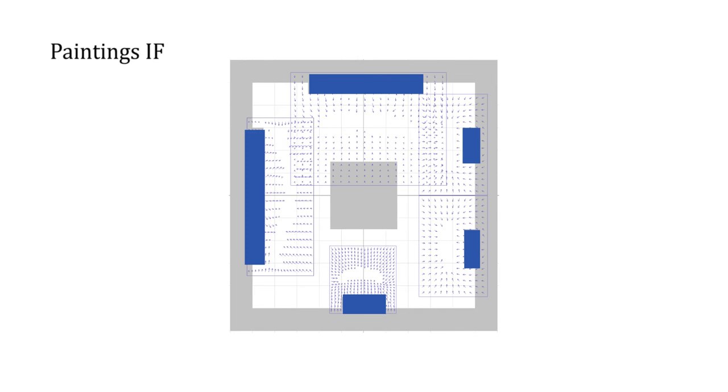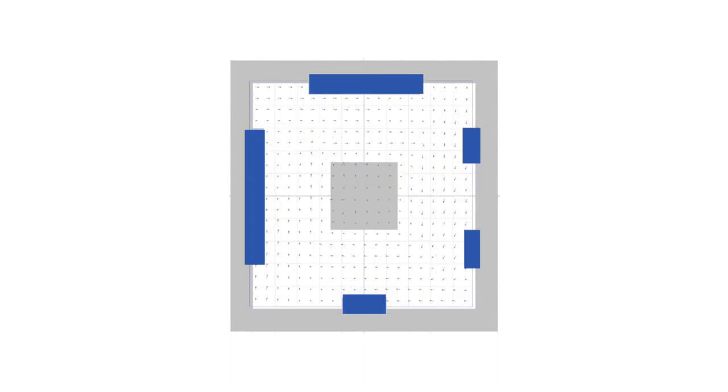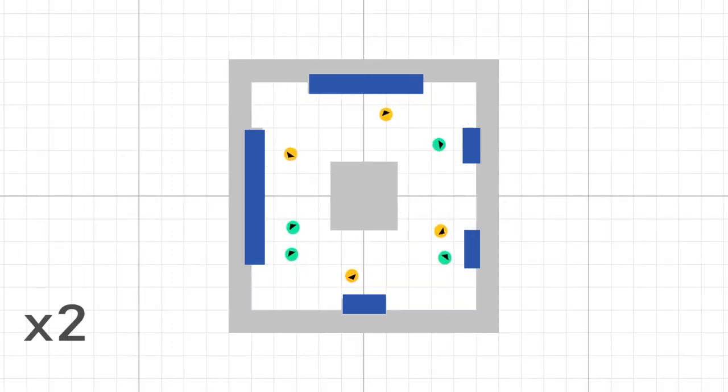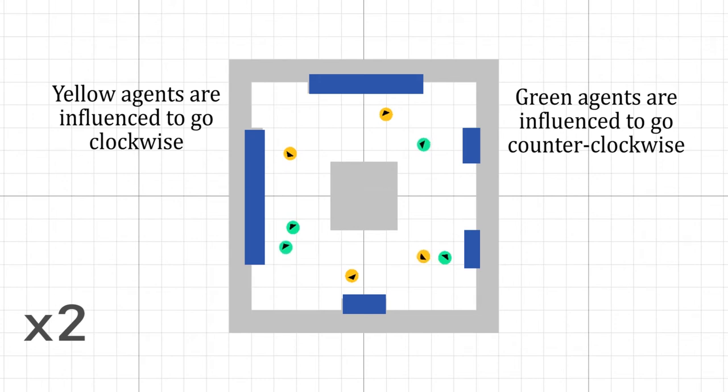Each painting is the source of an orientation field and a velocity field, attracting agents to observe the painting. The central pillar is the source of a circular interaction field. Two fields are applied: one clockwise, which will be affecting the yellow agents, the other anti-clockwise, which will be affecting the green agents. Each group will therefore exhibit a different direction of visit.